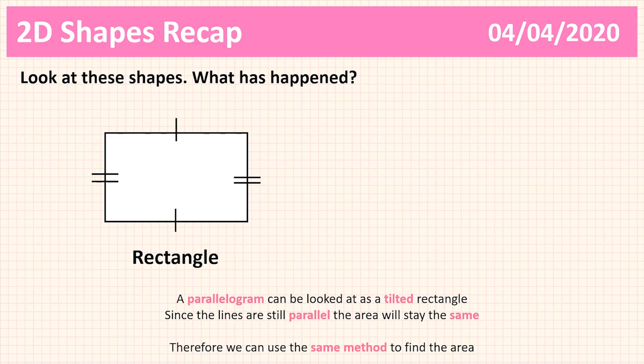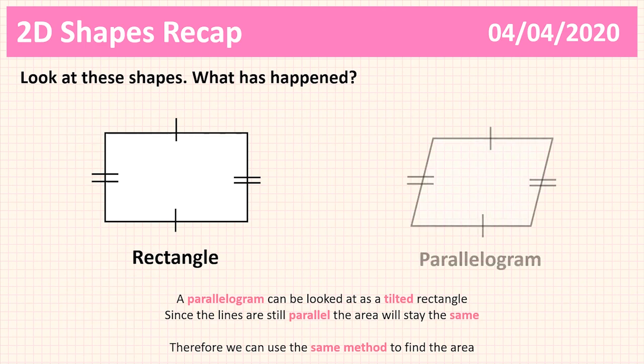Another type of shape we have is a parallelogram. Parallelograms can be looked at as tilted rectangles — the lines are still parallel, we've just tipped the rectangle over, so the area stays the same. We can use the same method: we still need the perpendicular height and the base, and we just multiply those two together to get the area.